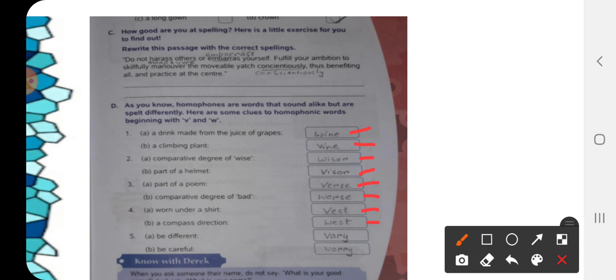The last one, 5A, different means vary, V-A-R-Y, vary. And 5B, be careful means wary. Wary. W-A-R-Y. When I say vary and wary, it's almost same. The spellings are different. With this we complete this exercise of homophones.